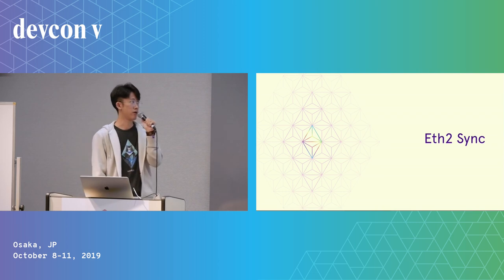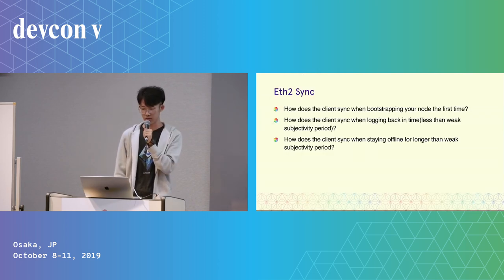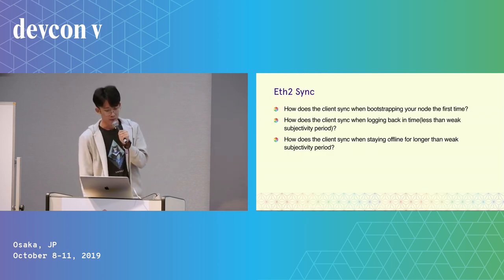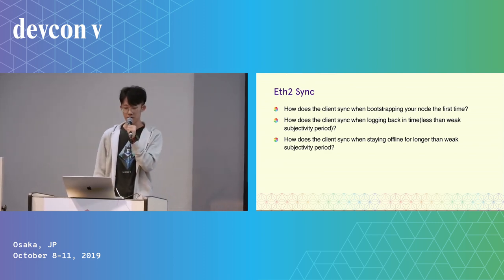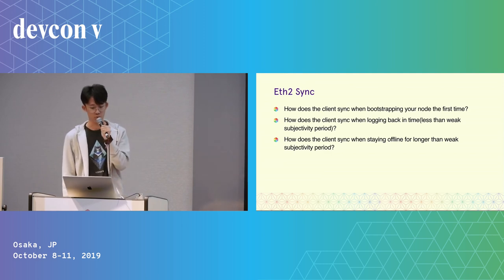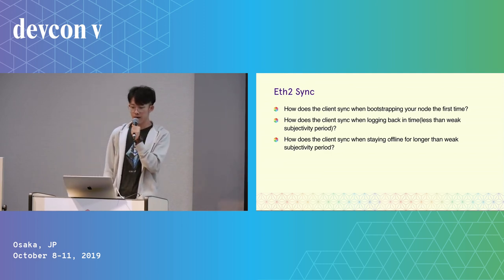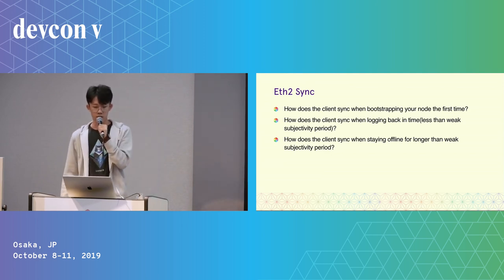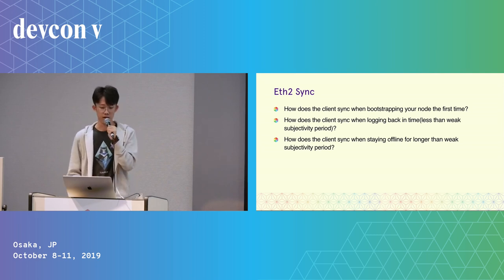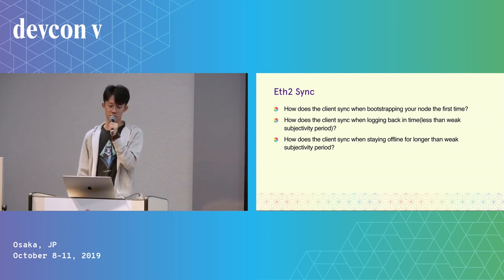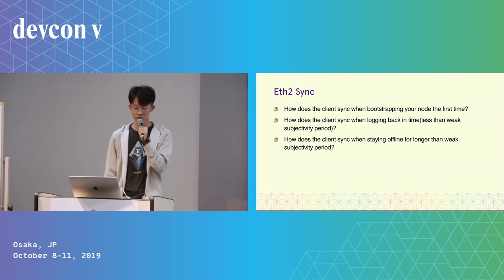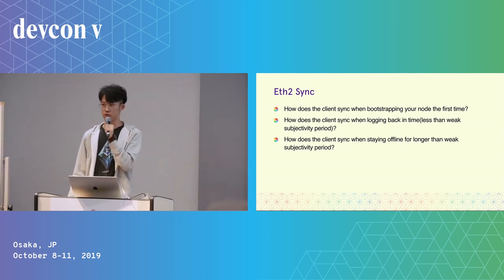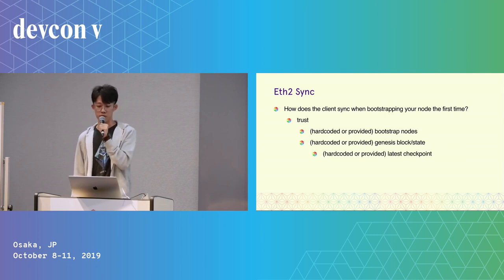Next, I will talk about how the syncing protocol works in ETH2. I will walk through how the client syncs in three different situations: first, when you bootstrap your node for the first time; second, when you go offline and log back in before the weak subjectivity period ends; and third, when you stay offline for too long — longer than the weak subjectivity period.